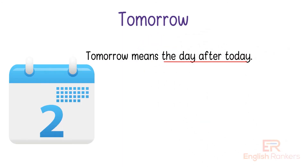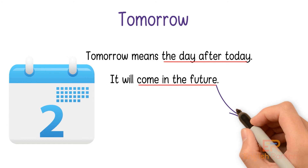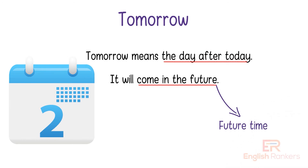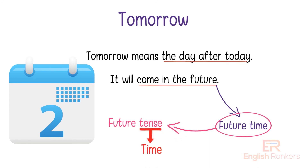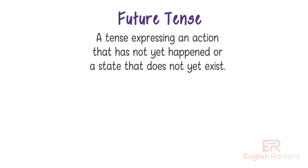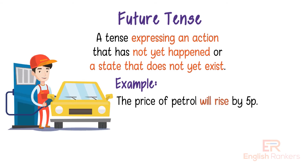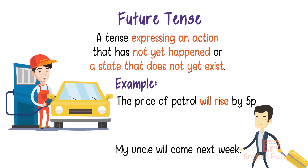What do you mean by tomorrow? Tomorrow means the day after today — it has not come yet; it will come in the future. The time which has not come yet and will come in the future is called future time, or future tense, as tense means time. We can define future tense as: a tense expressing an action that has not yet happened or a state that does not yet exist. For example: The price of petrol will rise by 5%. My uncle will come next week.